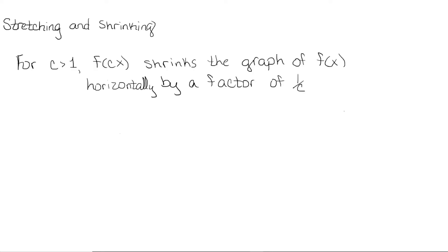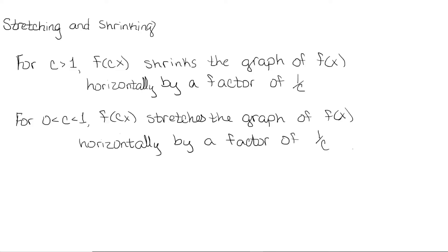Now let's talk about stretching or shrinking horizontally. For c greater than 1, to graph f of cx, we need to shrink the graph of f of x horizontally by a factor of 1 over c. So multiplying x by a number greater than 1 causes the graph to shrink. Multiplying x by a number between 0 and 1 is going to stretch the graph horizontally by a factor of 1 over c. So horizontal stretching and shrinking is counterintuitive — multiplying by bigger numbers shrinks the horizontal graph, whereas multiplying by smaller numbers stretches it horizontally.